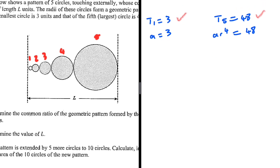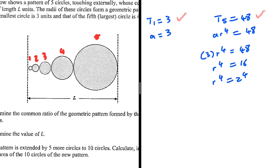Substituting a into t5: 3 multiplied by r to the power 4 equals 48. So r to the power 4 equals 48 divided by 3, which is 16. We need a number that multiplies itself four times to give 16 — that is 2. So r to the 4 equals 2 to the 4, therefore r equals 2.